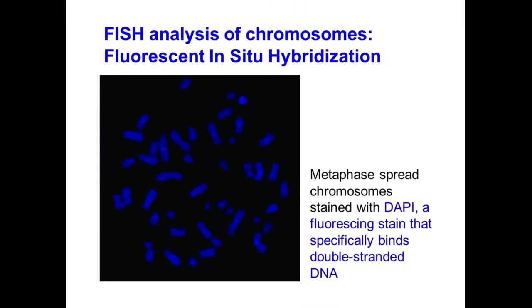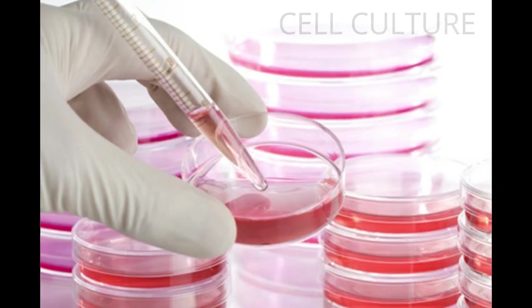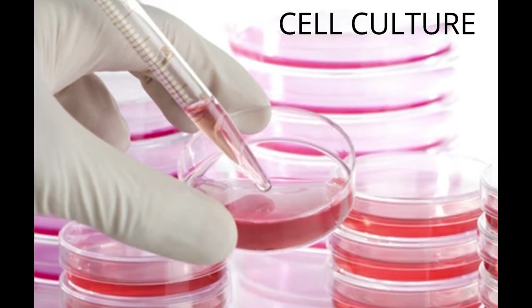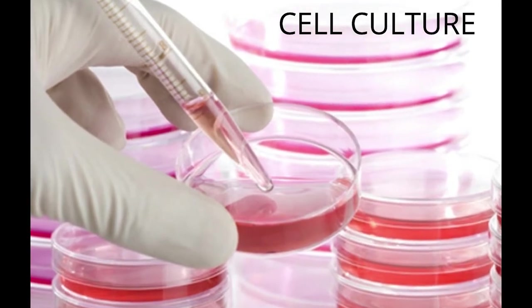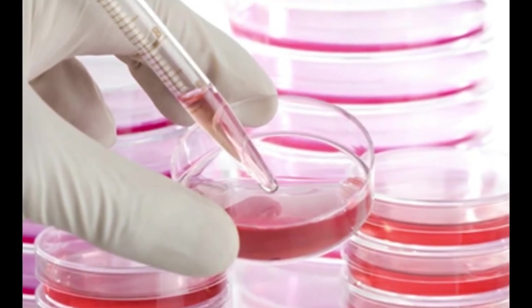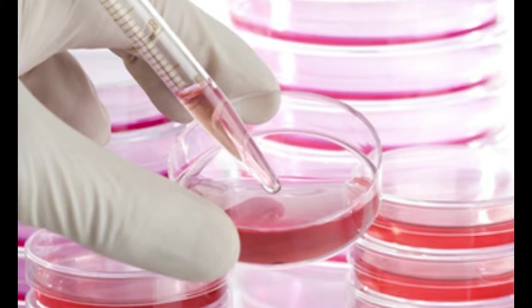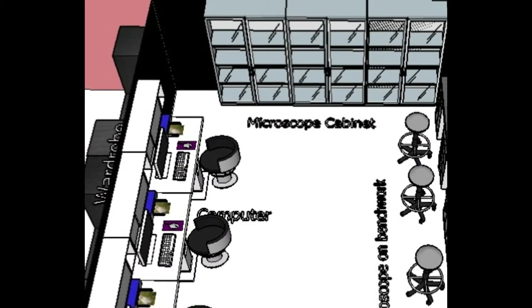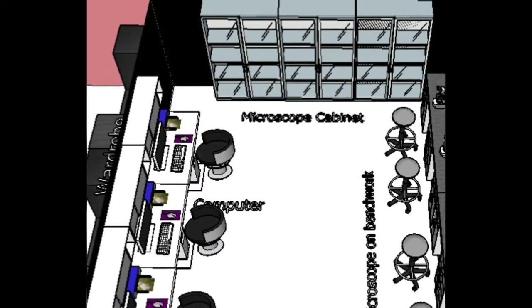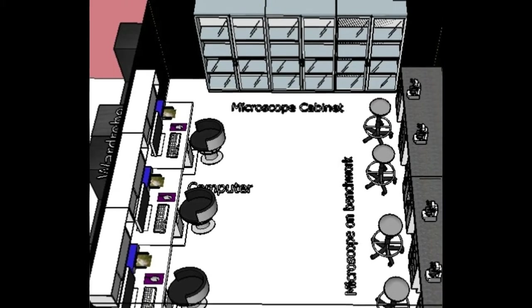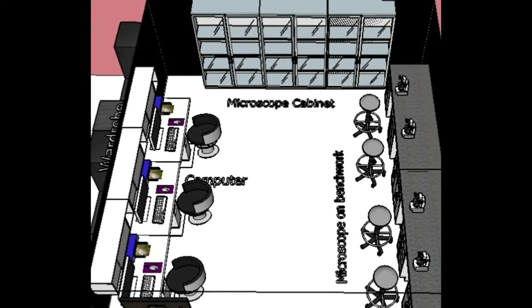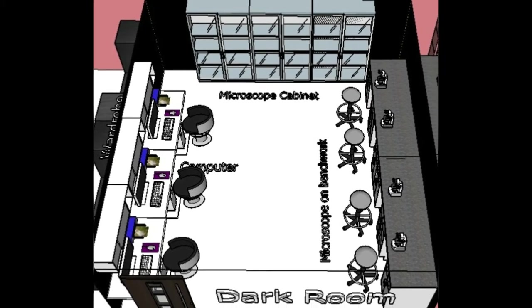For further tests, bone marrow samples are used for cytogenetics and FISH tests. The culture room with a biosafety cabinet class 2 is used for cell culture to investigate bone marrow disorders in cell lines. The dark room is used to carry out FISH study.